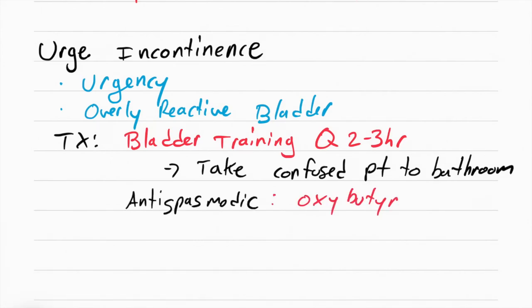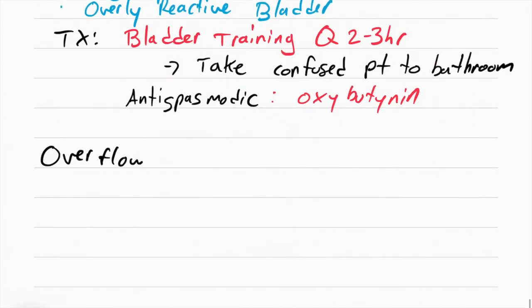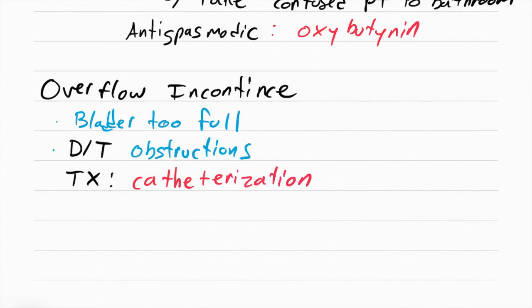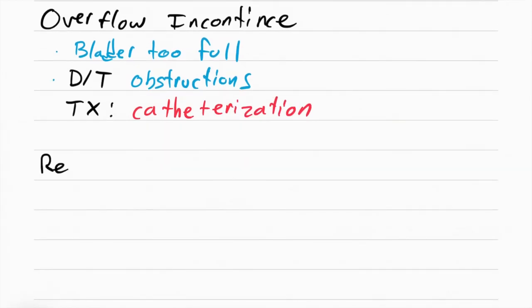The next kind is called overflow incontinence, and this is because the bladder is too full because of an obstruction. The treatment for this is going to be to catheterize. The next kind of incontinence is called reflex incontinence and this is caused by a spinal cord injury. The treatment is also catheterization.